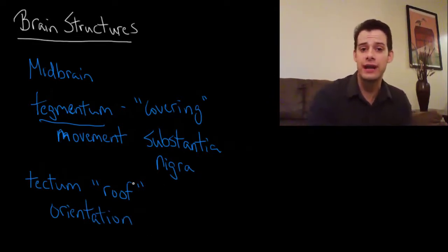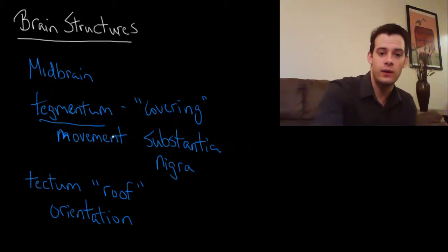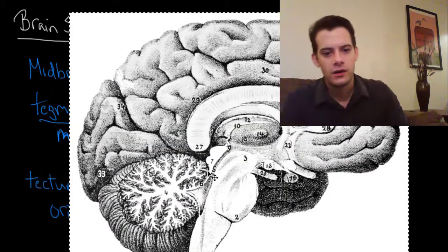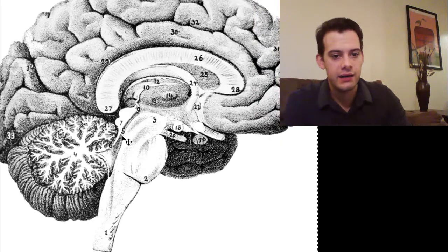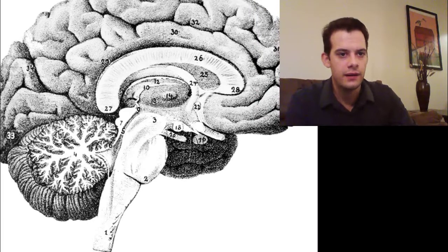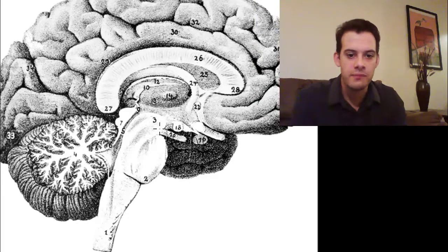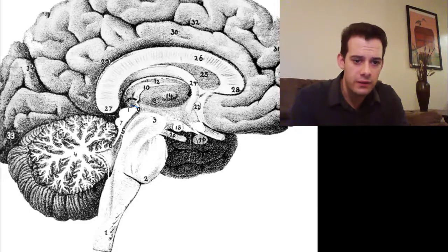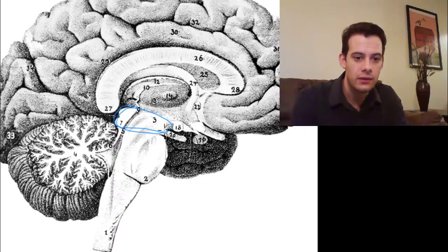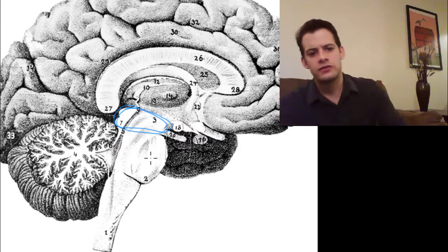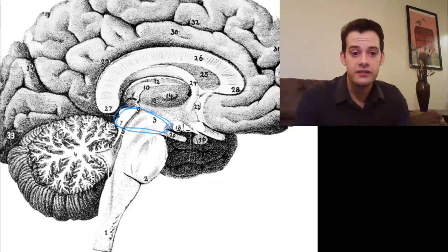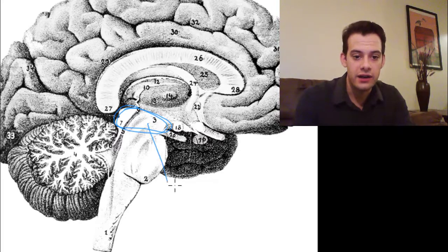Alright, so let's take a look at a diagram of the brain and see where these areas are. Okay, so here's a brain here and so the midbrain is quite small, it's just this region here. So just above the pons we get to this section here,